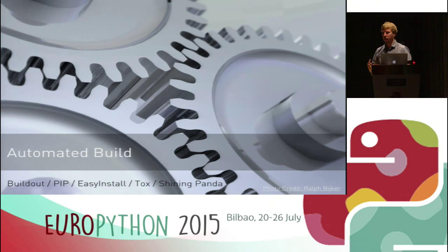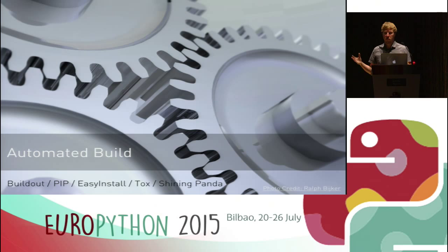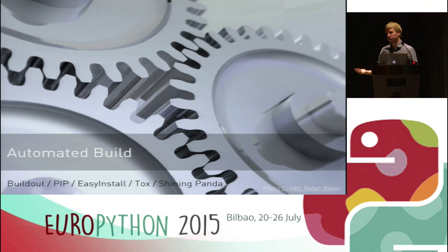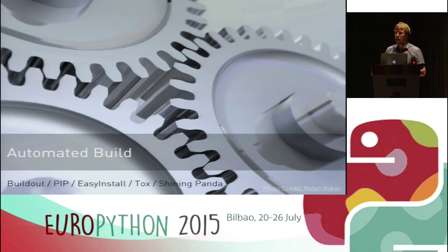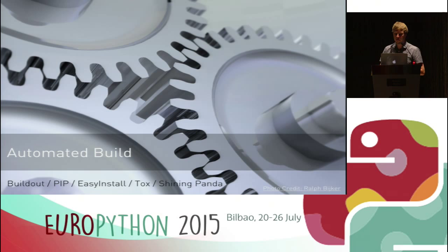In order to automatically build and test your software, you need an automated build. In the Python community we have tools for that. In Plone we use Buildout; most people use pip or easy_install, which are also fine. You can use tox on the CI system to configure what's run. On Jenkins, there's a plugin called Shining Panda that allows you to create virtualenvs or buildouts and install things via pip automatically — a convenience tool if you want a nice wrapper for Python.